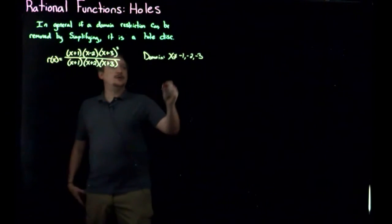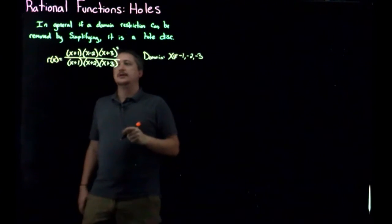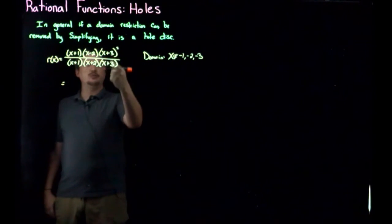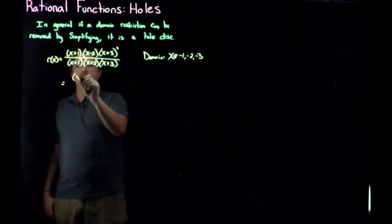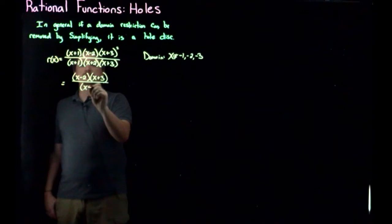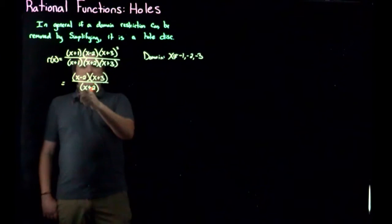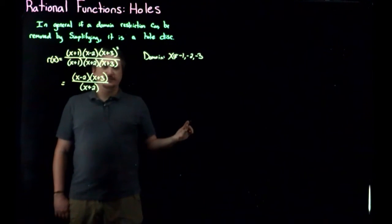And then once I have my domain, I can go ahead and simplify the function, which I can do the same way I did before. So the x plus ones cancel out, one of the x plus threes cancel out, I'm going to get x minus two, x plus three in the top over x plus two in the bottom.